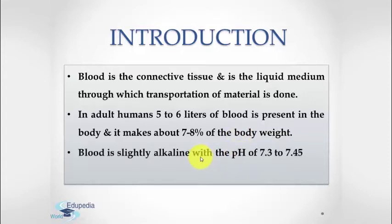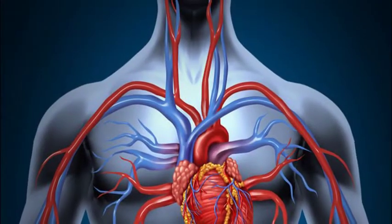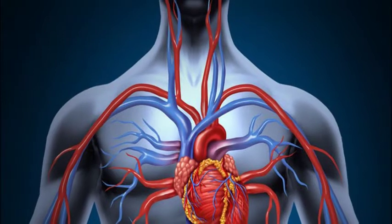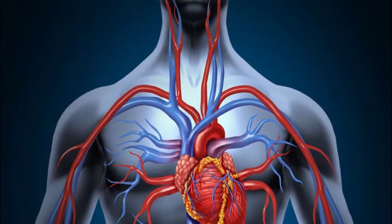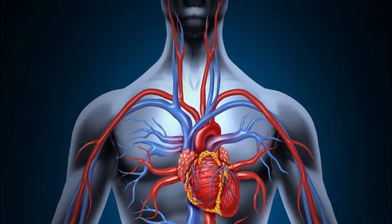The blood is slightly alkaline with a pH of 7.3 to 7.45. The blood when taken from an artery is bright red in color; it is dark red in color when taken from a vein. In color diagrams of blood circulation, the veins are shown in blue color and the arteries in red — however, this is done for the purpose of contrast only.